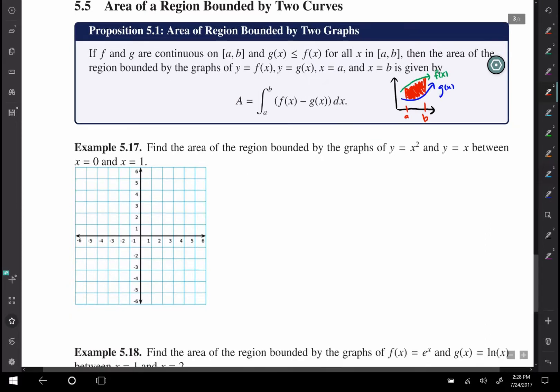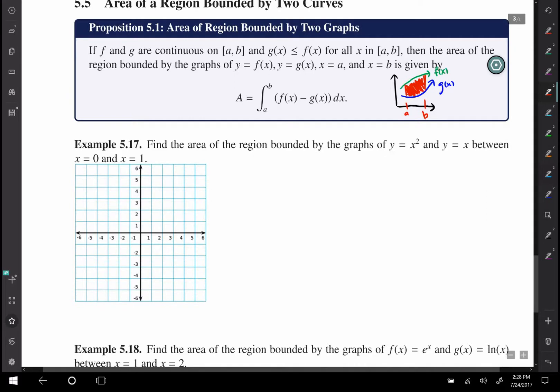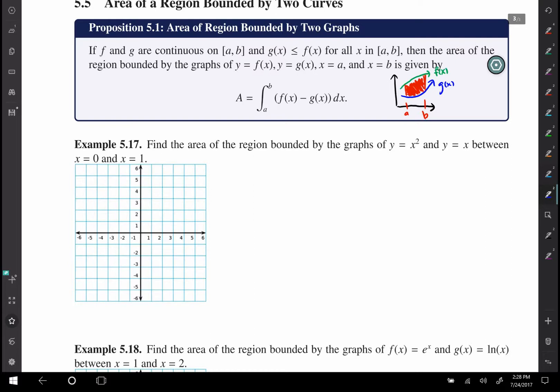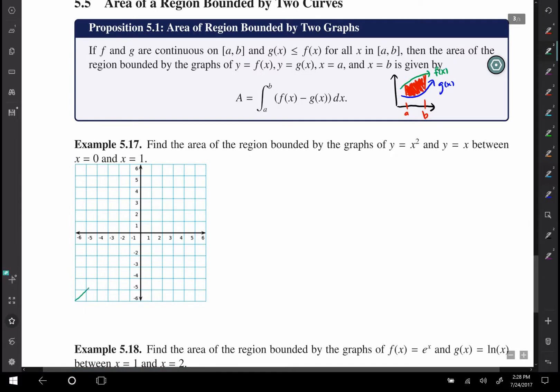In Example 5.17, we're asked to find the area bounded by the graphs of y = x² and y = x between x = 0 and x = 1. The first thing you want to do is plot both of those curves. y = x is actually the easier of the two curves to plot, so let's do that first.